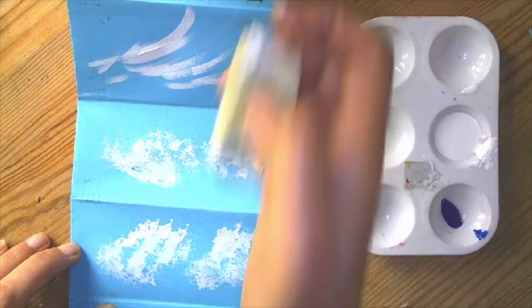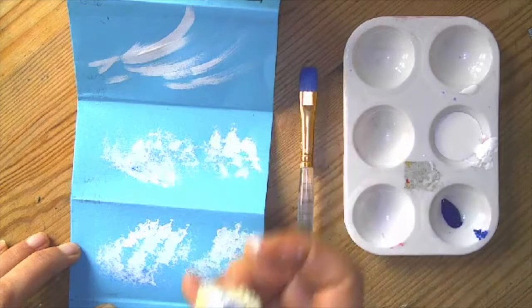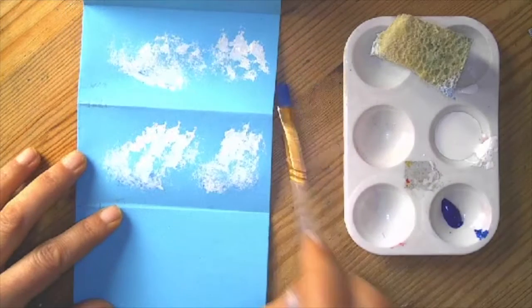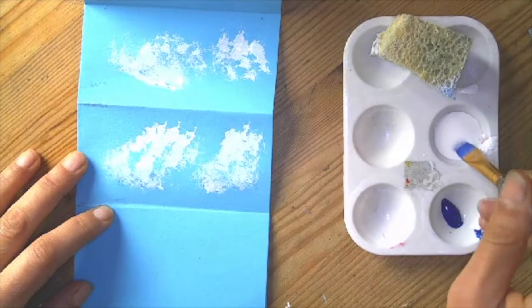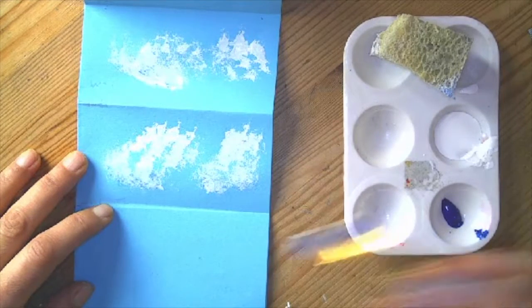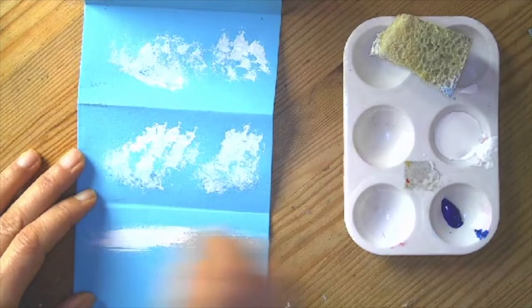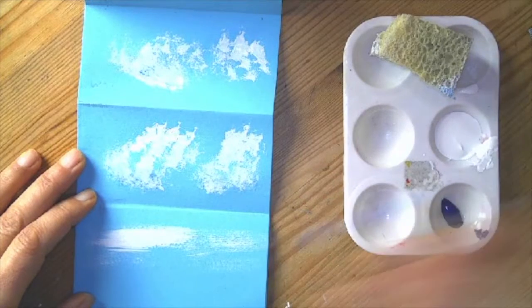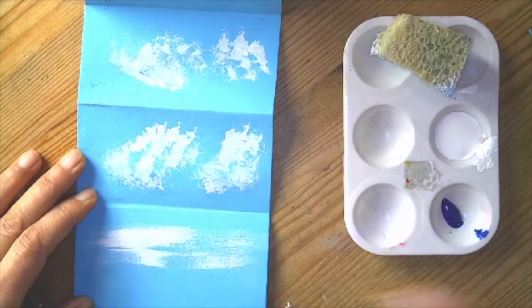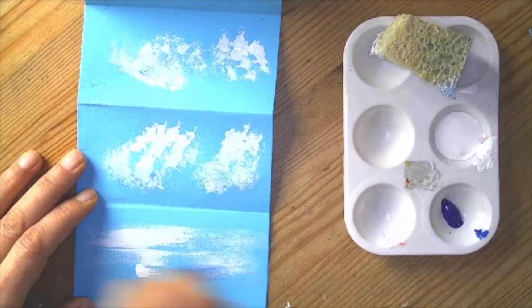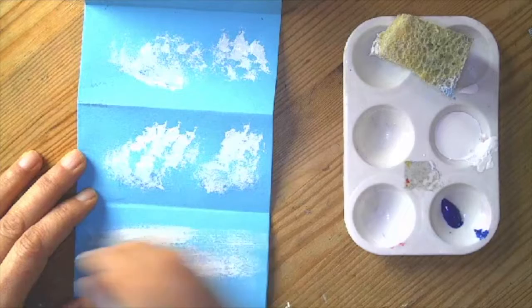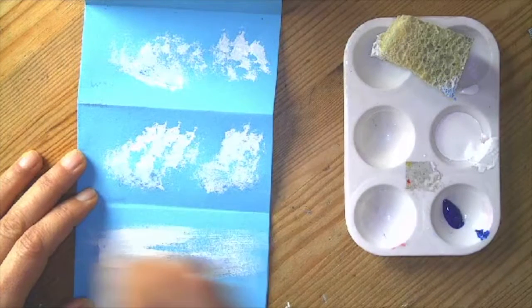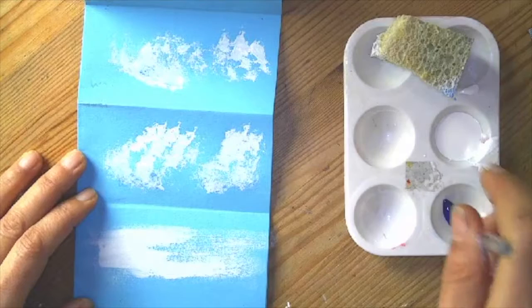So we've got our cirrus, our wispy clouds, our alto cumulus, our cumulus. And then down below, I'm going to take my wide brush, and I'm going to make some stratus clouds. Stratus are kind of those ones that kind of cover the whole sky. So I'm just kind of making some back and forth motions. And this is a nice time if you have black tempera paint, to just kind of pull it a little bit because these are often gray in color.